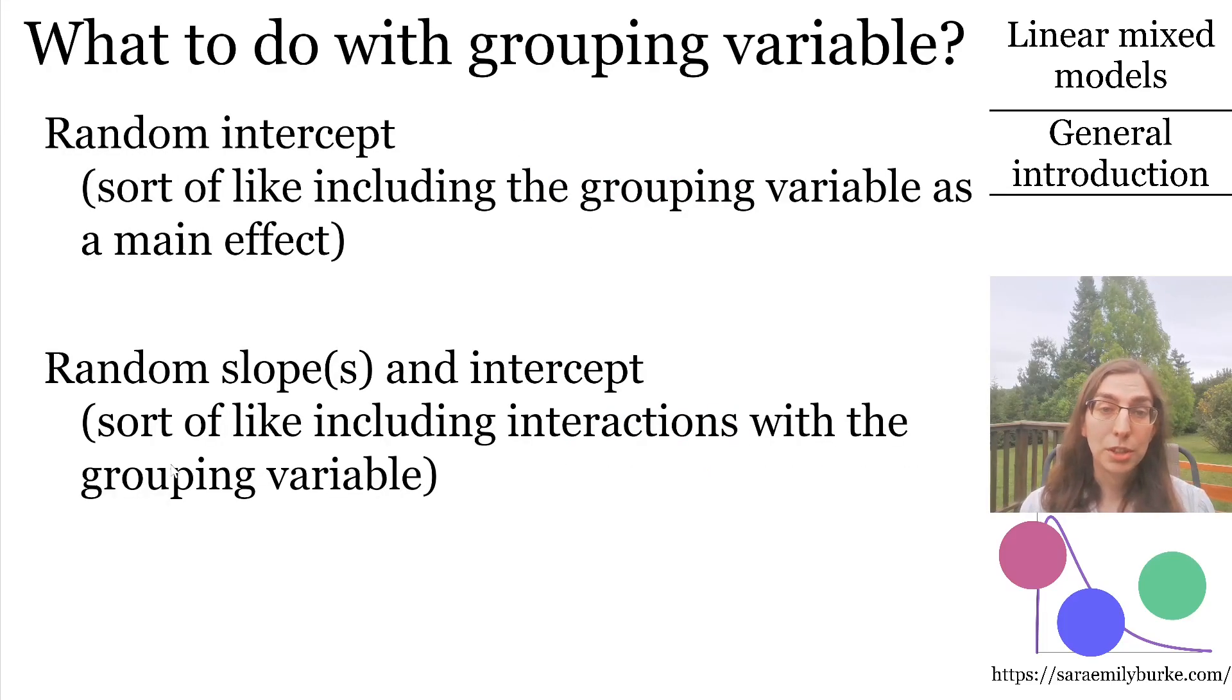So actually, you have two reasonable options in these cases. Use something called a random intercept, or do that and also include random slopes. These two options are sort of like including the grouping variable as a main effect versus adding interactions along with it. Except that the random intercept and random slopes avoid the two big problems I described a moment ago, the huge number of categories and the assumption of independence.